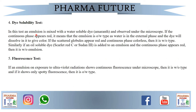Dye solubility test: the emulsion is mixed with a water-soluble dye like Amaranth and observed under a microscope. If the continuous phase appears red, the emulsion is O/W type. If scattered globules appear red and the continuous phase is colorless, then it is W/O. Similarly, if an oil-soluble dye is added and the continuous phase appears red, the emulsion is W/O. Fluorescence test: if the emulsion shows continuous fluorescence under UV radiation, it is W/O; if it shows spotty fluorescence, it is O/W.